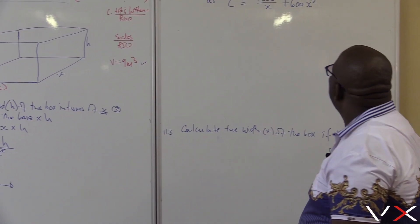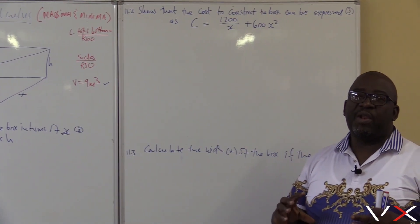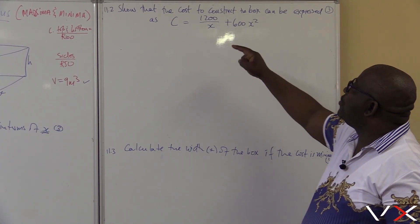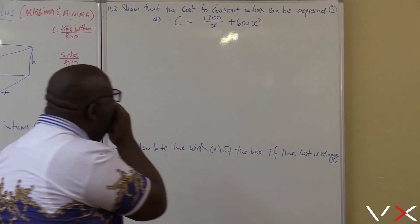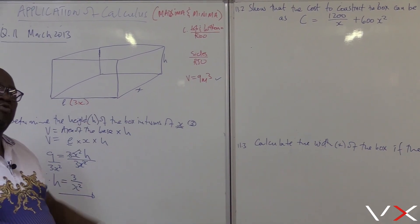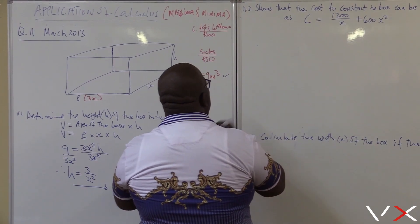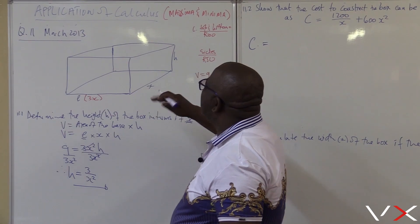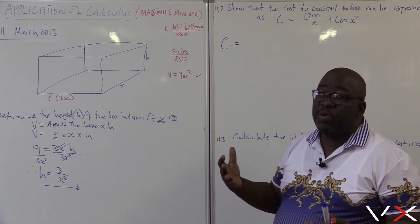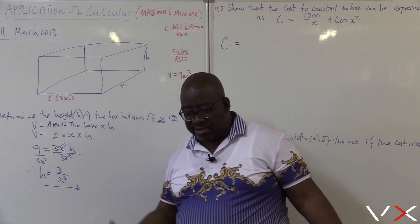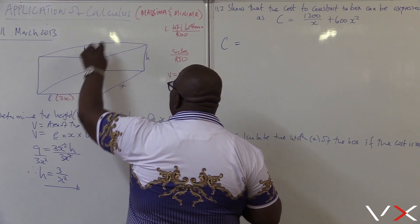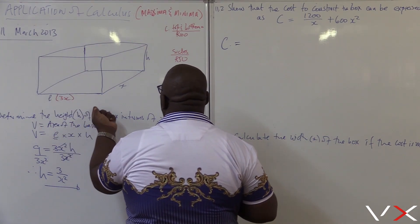Show that the cost to construct the box can be expressed as C equals that given value. We've got to show that. Let's look at this box — we want the cost. The cost equals the cost of all the sides. This is where total surface area comes in handy. We're looking at all the surfaces in this box. Remember, this is a closed box. If it was an open box, we wouldn't involve the top. How many surfaces do we have? We've got the front, back, two sides, then the top and bottom — and the costs are not the same.